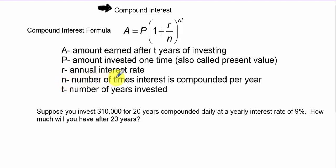N is the number of times compounded per year. If it's annually, it's once. If it's monthly, it's 12 times. Semi-annually is twice, quarterly four times, daily 365. And t is the number of years invested.